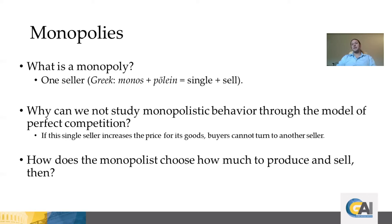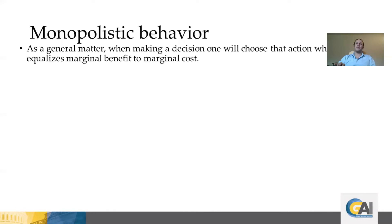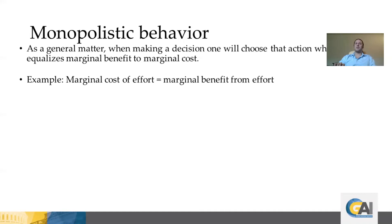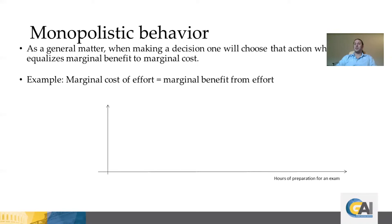Under these circumstances, how does a monopolist choose how much to produce and sell? The general principle is that when making a decision, one will choose the action that equalizes marginal benefit and marginal cost. To illustrate, consider a student deciding how much time to spend preparing for an exam. On the horizontal axis we have hours spent studying, and on the vertical axis we have benefits.